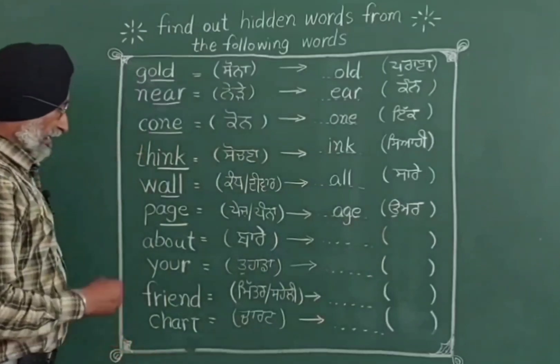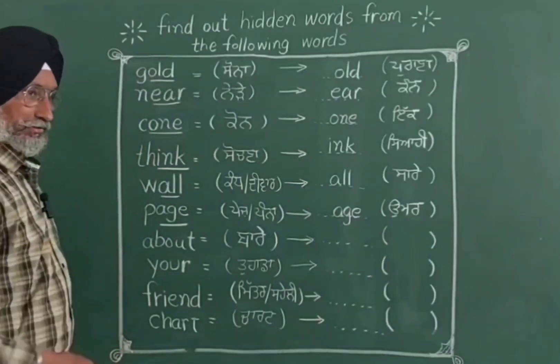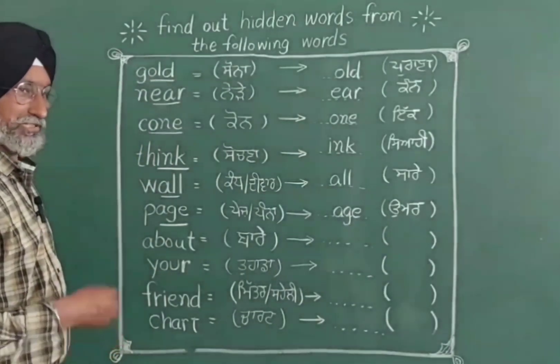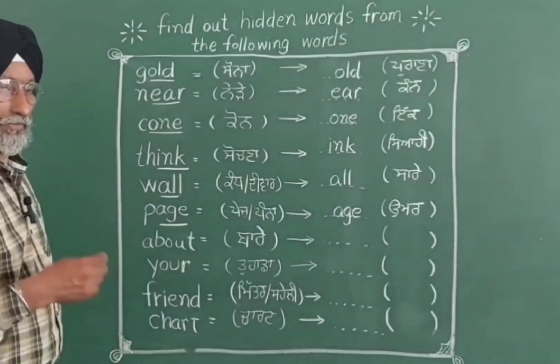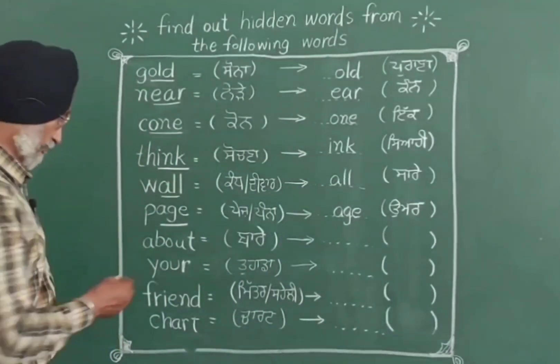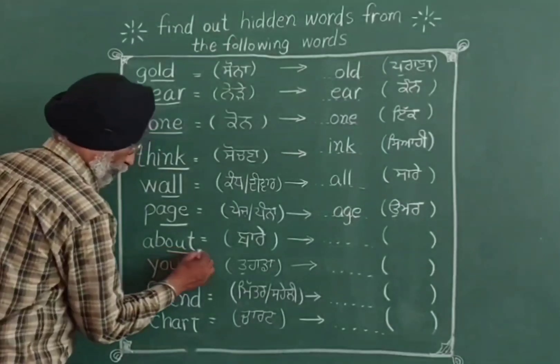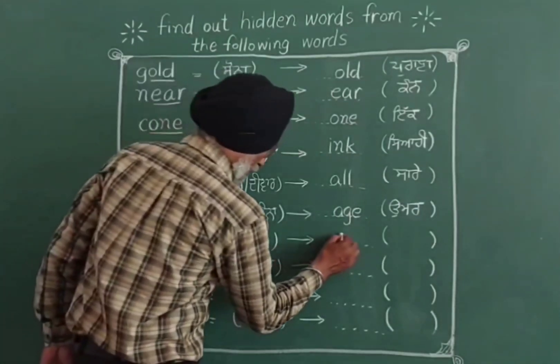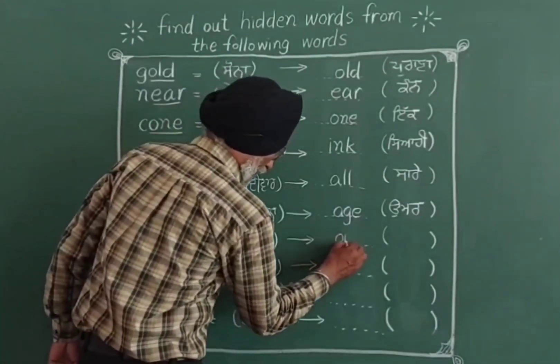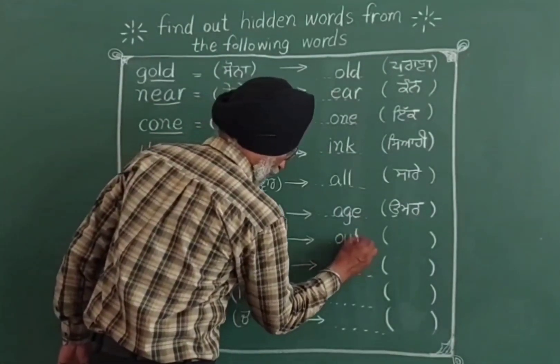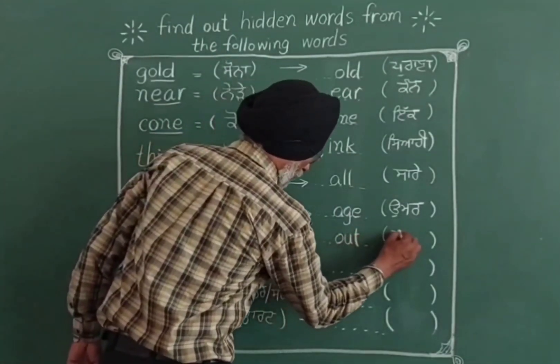Again, ABOUT — about means 'kisi ke baare mein karna' (regarding something). The hidden word inside ABOUT is OUT. OUT means 'bahar' (outside).